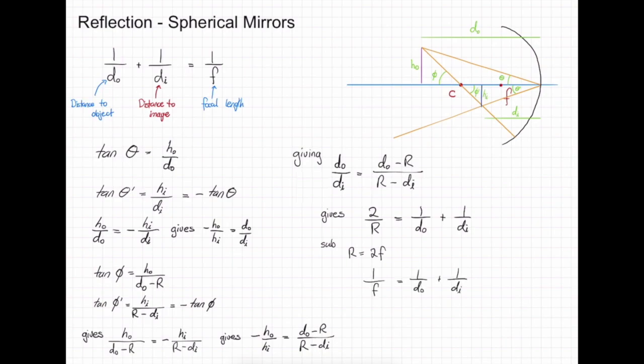Therefore, we have derived our spherical mirror equation. In summary, we have derived the spherical mirror equation by relating the different triangles that exist as an object and an image are produced. Thanks for watching, see you in the next video.